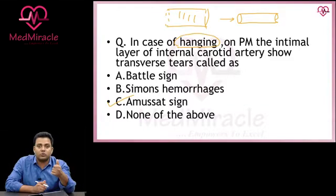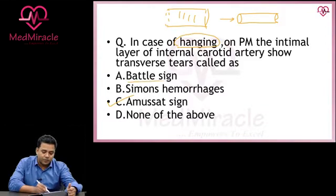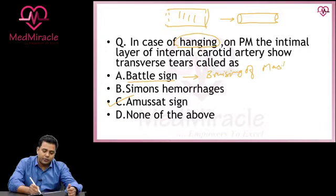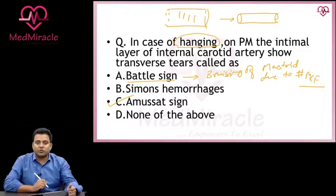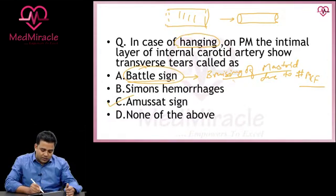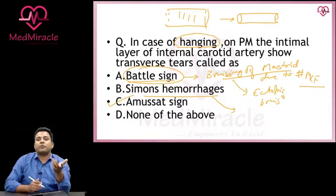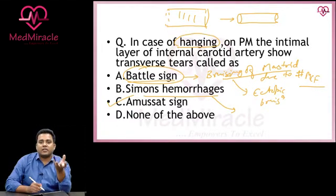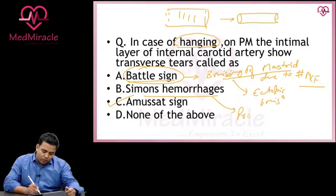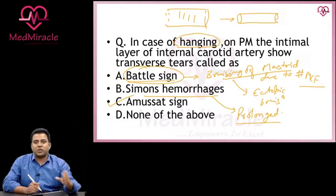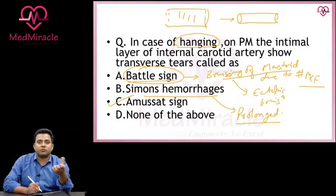What is Battle sign? Battle sign is bruising of the mastoid due to fracture of the temporal bones — that is your middle cranial fossa. Fracture of the middle cranial fossa leads to bruising over the mastoid, called Battle sign — a type of ectopic bruising. What is Simon's hemorrhage? Simon's hemorrhage is extravasation of blood over the anterior longitudinal ligament of the lumbar vertebra. This is seen in prolonged hanging cases — for example, if the person has been hanged for 24 to 36 hours.